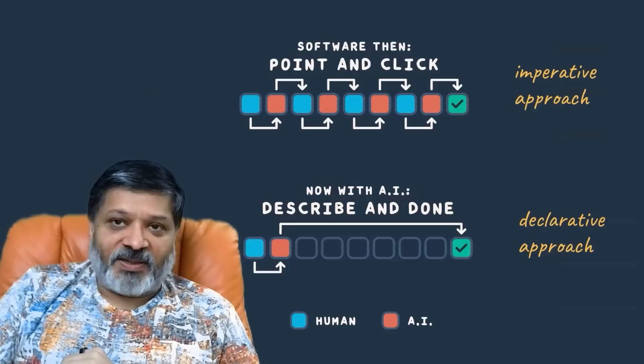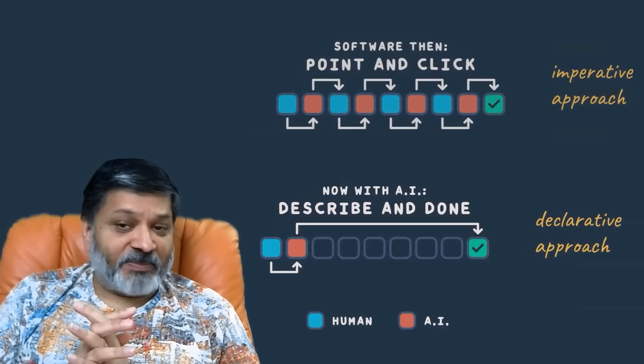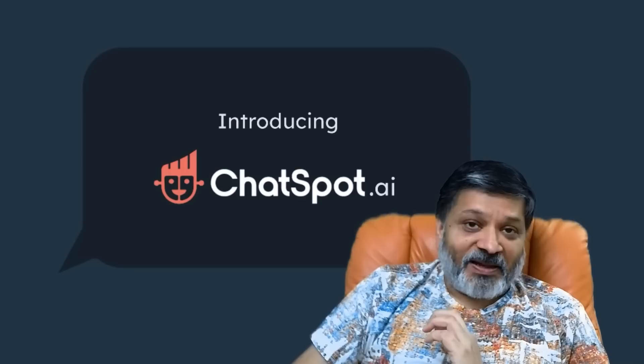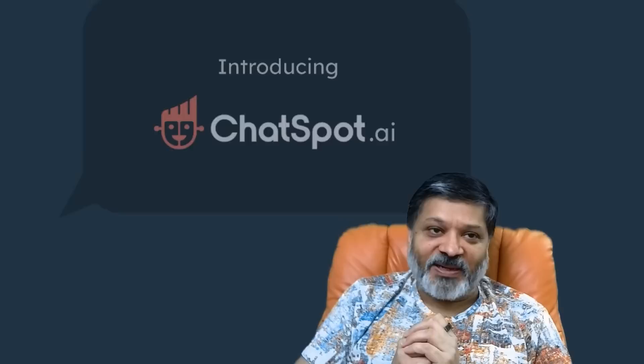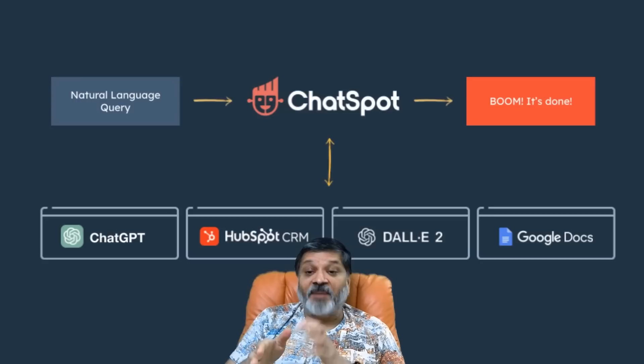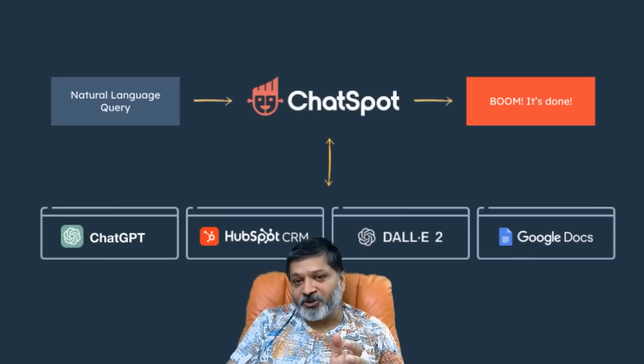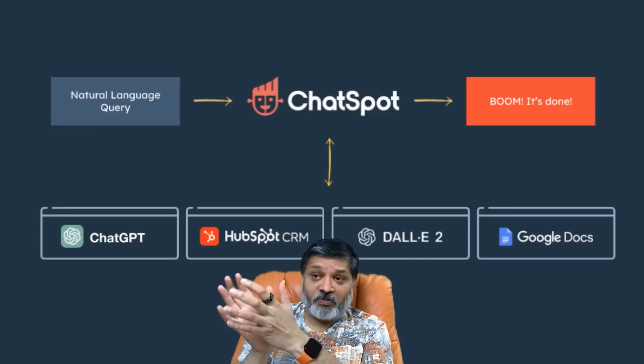Based on this excitement around generative AI and ChatGPT, I've been working with the HubSpot team on an app called ChatSpot, and I'd like to show it to you. Here's how ChatSpot works: it takes a natural language query in, just like ChatGPT, and then using the power of ChatGPT, the HubSpot CRM, Dolly2, Google Docs, keyword research, and a bunch of other things, it does something with your natural language query and gives you the outcome you were looking for.